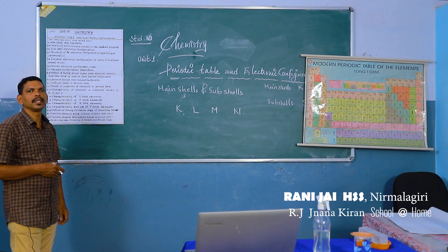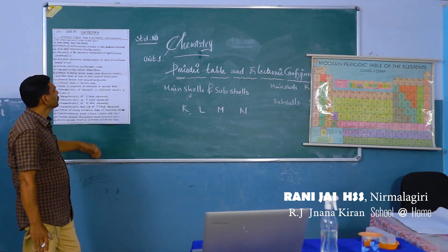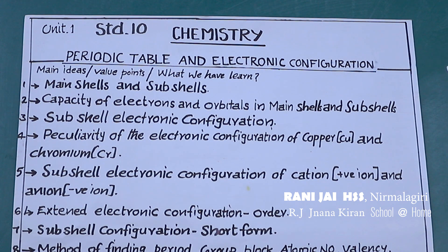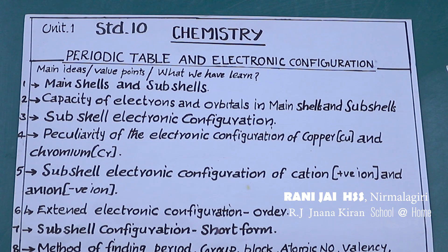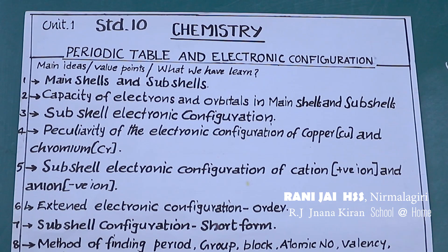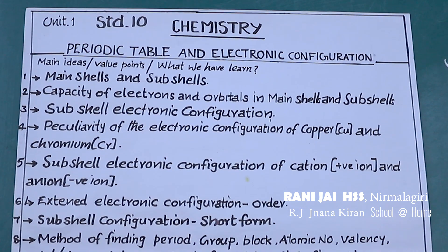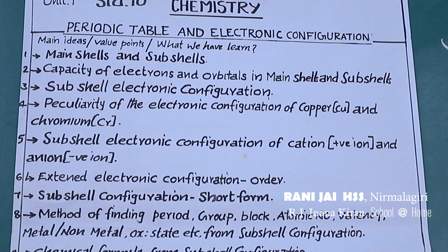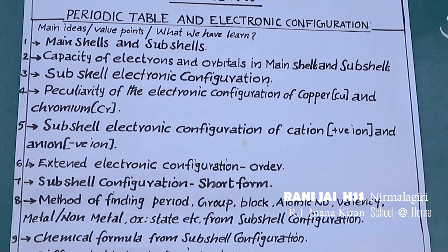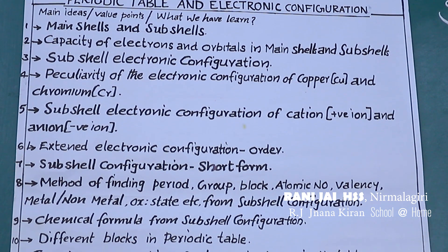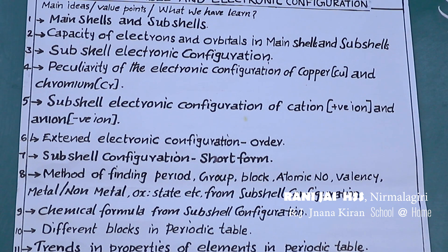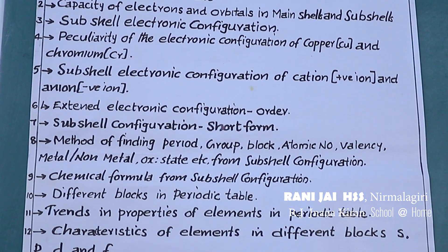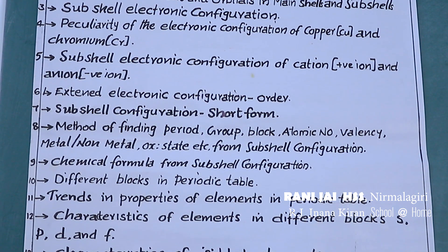So first of all we shall discuss the main shell and sub-shells, and the main points of this chapter. Note these points: main shell and sub-shells, capacity of electrons and orbitals in main shells and sub-shells, sub-shell electronic configuration, and the irregularity of electronic configuration of copper and chromium. Sub-shell electronic configuration of cations — positive ions — and anions — negative ions. Extended electronic configuration order and the short form method.